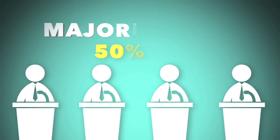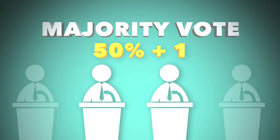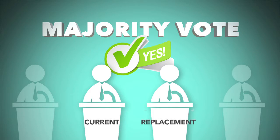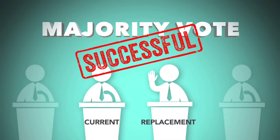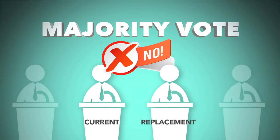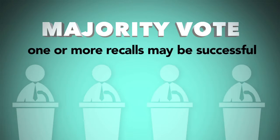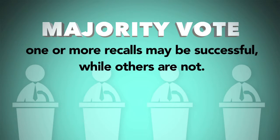A simple majority — 50% plus one — will determine if the recall is successful for each officeholder. If a majority of voters vote yes on the recall question, then the recall is successful and the replacement candidate who gets the most votes is elected to serve the remainder of the term. If a majority of voters vote no on the recall question, the current officeholder will remain in place to finish out his or her term. Each office is voted on individually; therefore, one or more recalls may be successful while others are not.